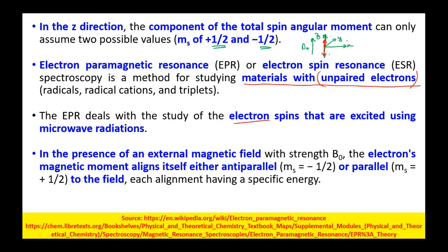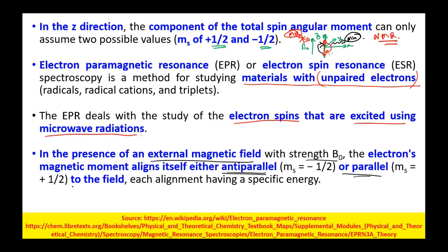EPR deals with the study of electron spins excited using microwave radiations. The microwave radiation flips the electron from the low-energy state to the high-energy state. When the microwave irradiation is stopped, the electron returns from the high-energy state to the low-energy state, releasing microwave radiation that is then analyzed. In the presence of external magnetic field B0, the electron's magnetic moment aligns either anti-parallel or parallel to the field, each alignment having a specific energy, with the anti-parallel moment corresponding to the high-energy state.